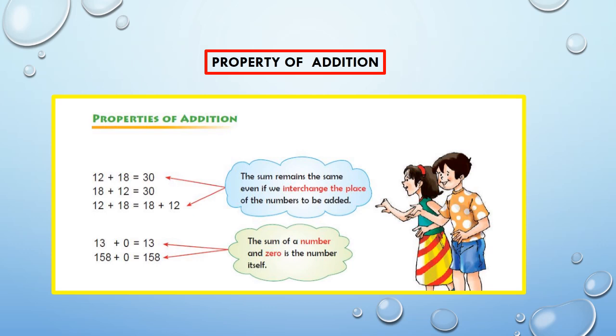Our last topic is Property of Addition. Number 1: The sum remains the same even if we interchange the place of numbers to be added. 12 plus 18 is equal to 30. Or 18 plus 12 is also equal to 30. And we can say that 12 plus 18 is equal to 18 plus 12.